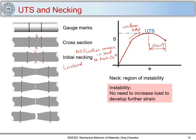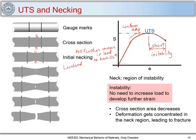The material is still deforming but no extra load is needed to deform it. This is why I call this region as instability. The cross-section area decreases and deformation gets concentrated in the neck region, and it leads to fracture.